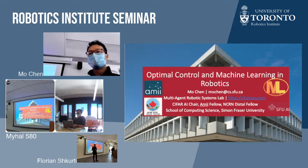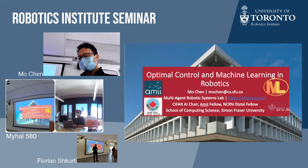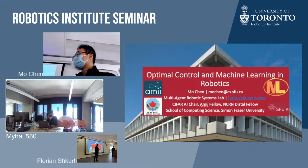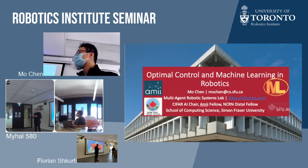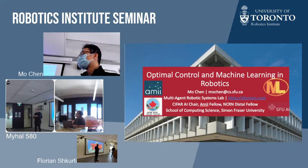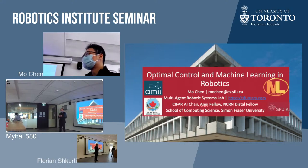Welcome everyone. This is the first in-person event for the Robotics Institute seminar series. Welcome to the audience in person and to people joining live from YouTube. Our invited speaker today is Mo Chen, an assistant professor in the School of Computing Science at Simon Fraser University, where he directs the multi-agent robotic systems lab. He is also a CIFAR AI chair, an AIME fellow, and an NCRN distal fellow. Mo is well known for his work in safety-critical systems, reachability analysis, safe control and reinforcement learning for both single and multi-agent systems, as well as visual navigation and human-robot interaction. Mo's research is characterized by the development of principled and rigorous methods for safety with provable guarantees for robot behaviors.